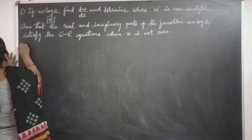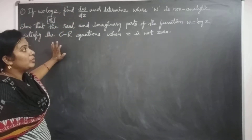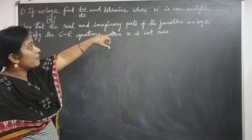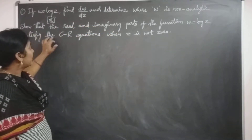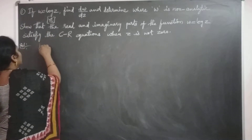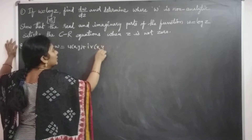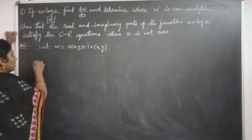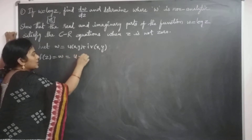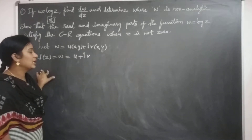The given problem is: if W is equal to log Z, find dW/dZ and determine where W is non-analytic. The same question in another way: show that the real and imaginary parts of the function W equal to log Z satisfy the Cauchy-Riemann equations when Z is not zero. Let W equal to U of X, Y plus i V of X, Y. This is a complex variable function, where U and V both involve variables X and Y in general.